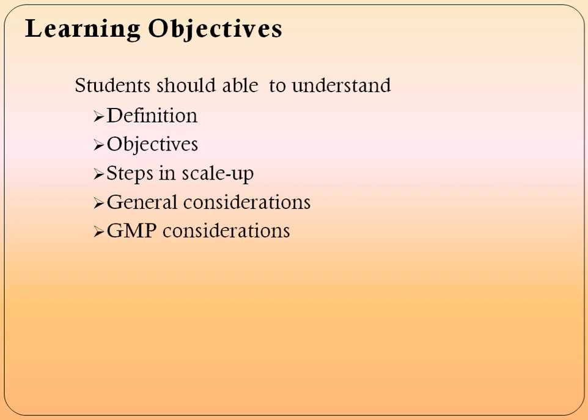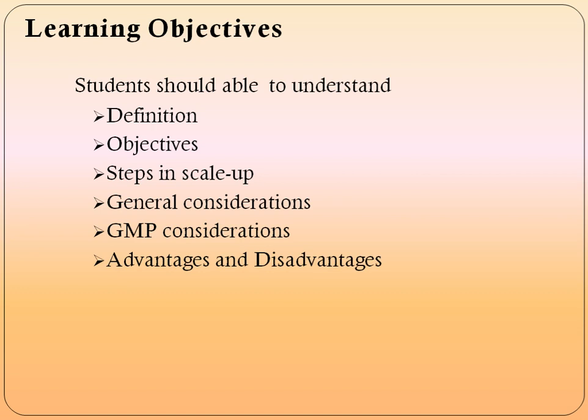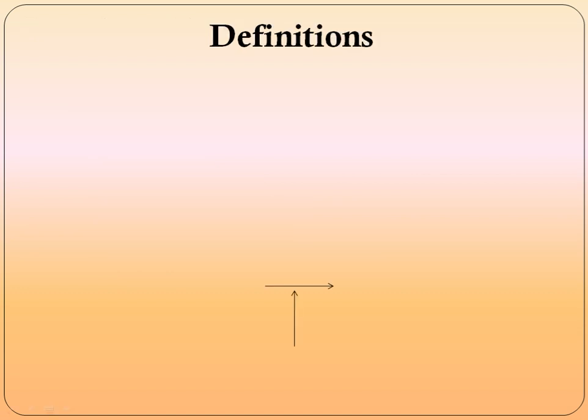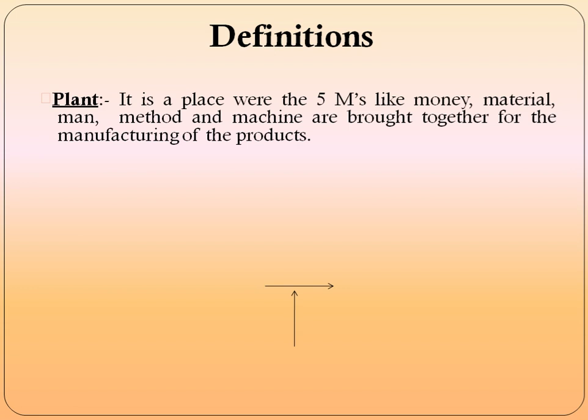Good manufacturing practices and their considerations, then advantages and disadvantages. Definition of 'plant': it is a place where the five M's — money, material, man, method, and machine — are brought together for manufacturing of products. For manufacturing any product, these five facilities or five M's are required.